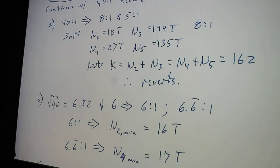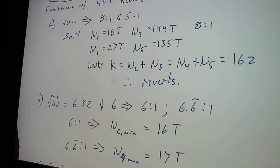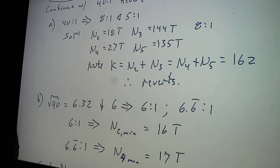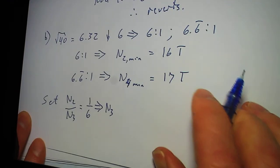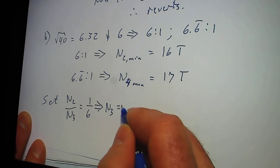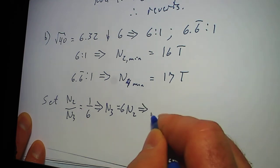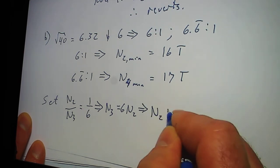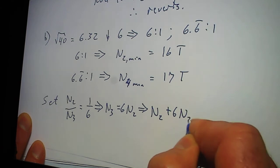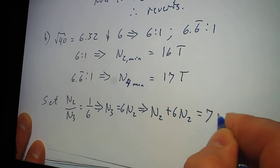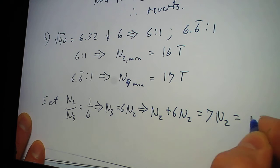So what I do here is I set N2 over N3 equal to 1 over 6. Which means that N3 equals 6N2.